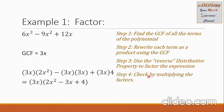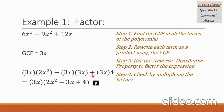Step 4: let us check our answer by multiplying the factors. We should go back to the original problem after multiplication. So 3x multiplied by 2x squared gives 6x cubed. The 3x multiplied by negative 3x gives negative 9x squared. And then 3x times 4 is positive 12x. So we are sure this is correct, and this is our final answer.